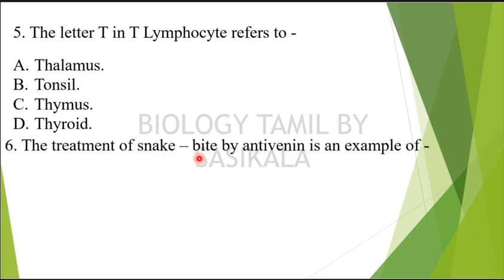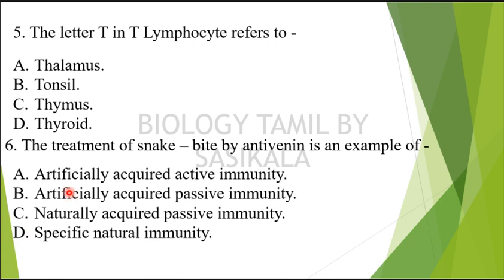Question 6: The treatment of snake bite by antivenin is an example of what type of immunity? The choices are: artificially acquired active immunity, artificially acquired passive immunity, cell-mediated immune response, or naturally acquired passive immunity. What do we say about this type of immune system?